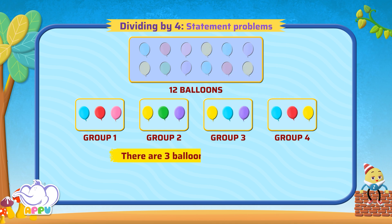There are 3 balloons in each group. We write it as 12 divided by 4 equals 3. Nice work!